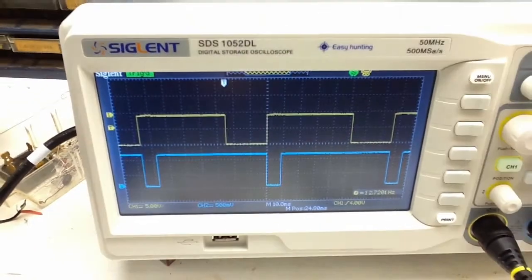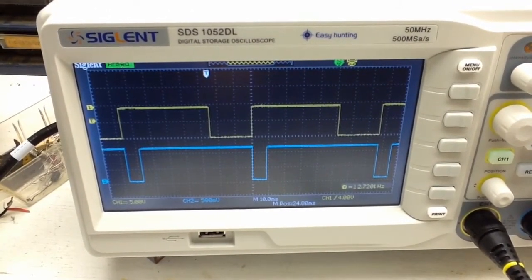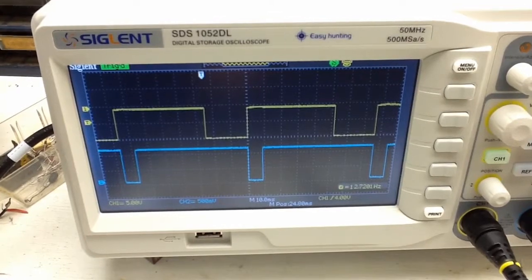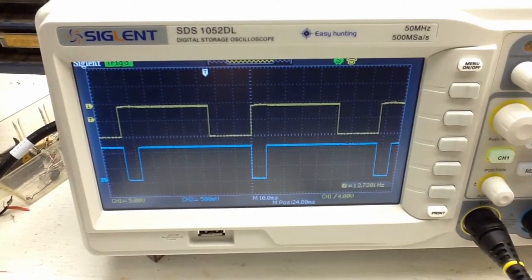And then here on the screen you can see the blue trace which is my oscillator which I'm using as a trigger. And every time it goes low it is triggering the timer chip.